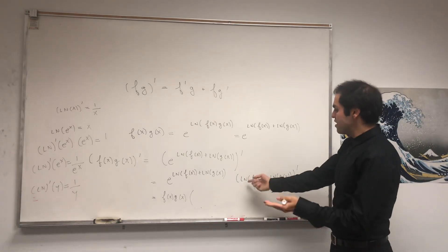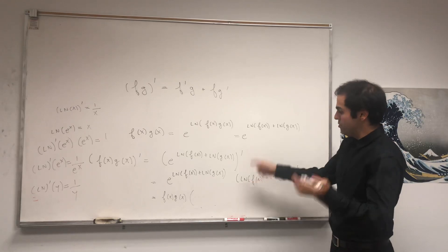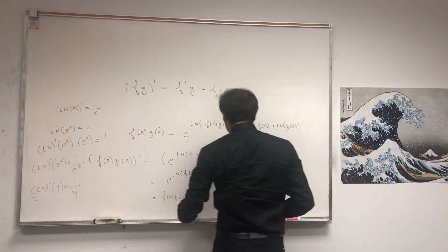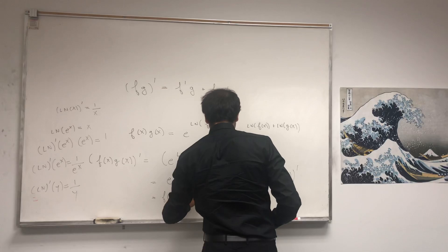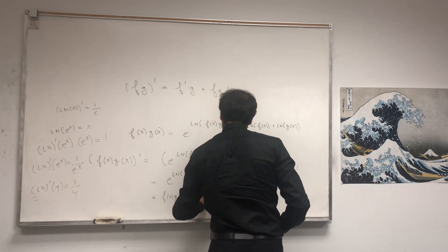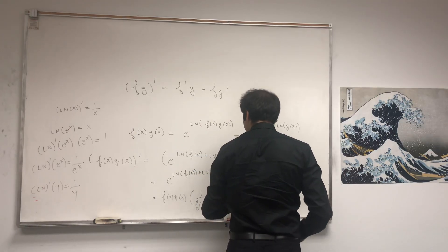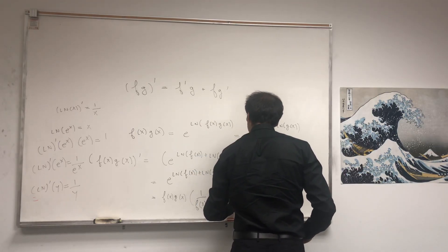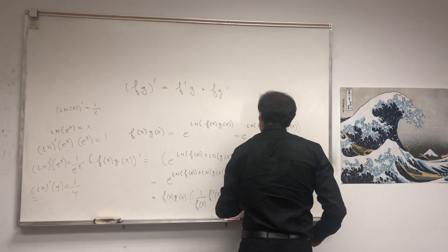Therefore, simply by applying the chain rule and this result, we get this equals 1 over f of x times f' of x, and similarly with g, plus 1 over g of x times g' of x.